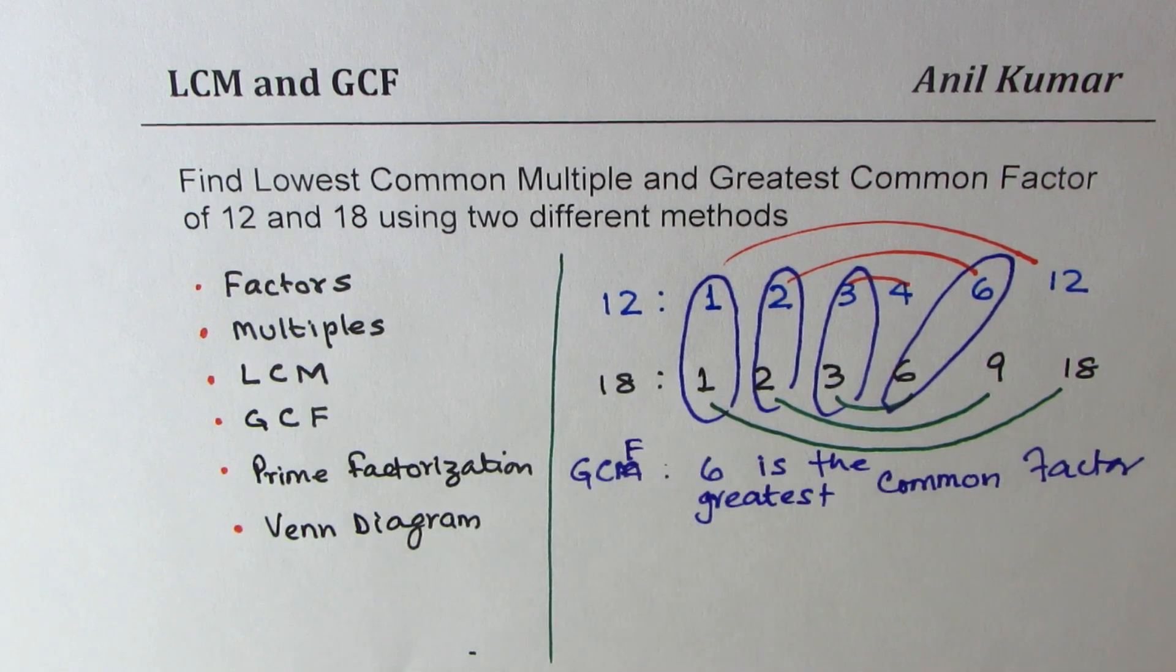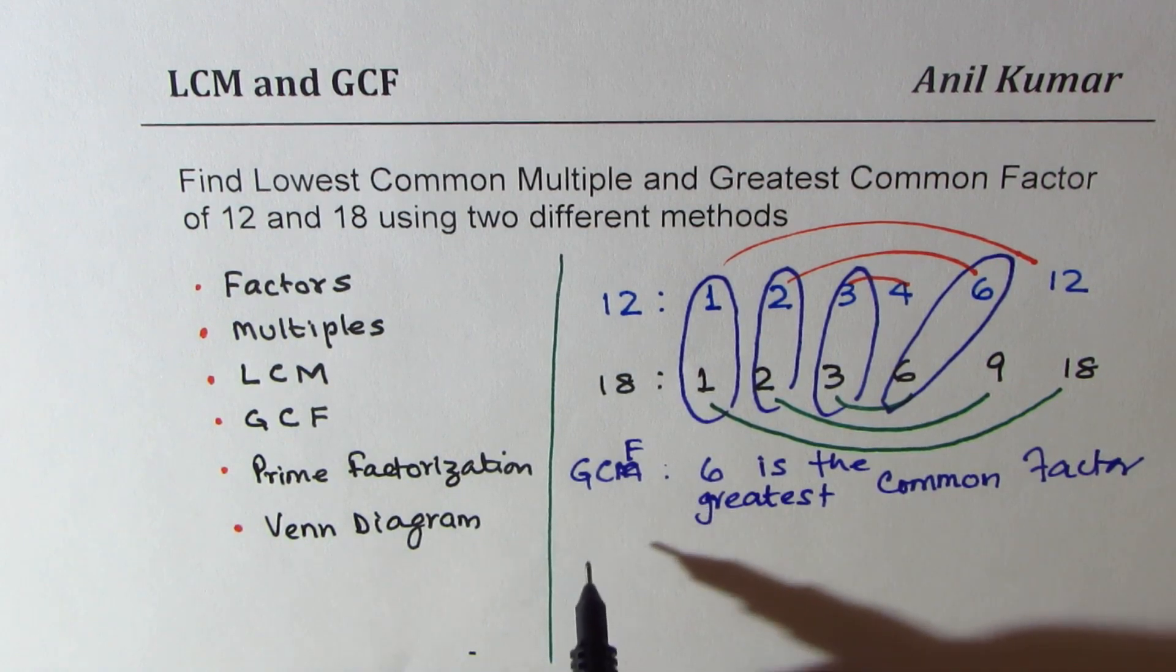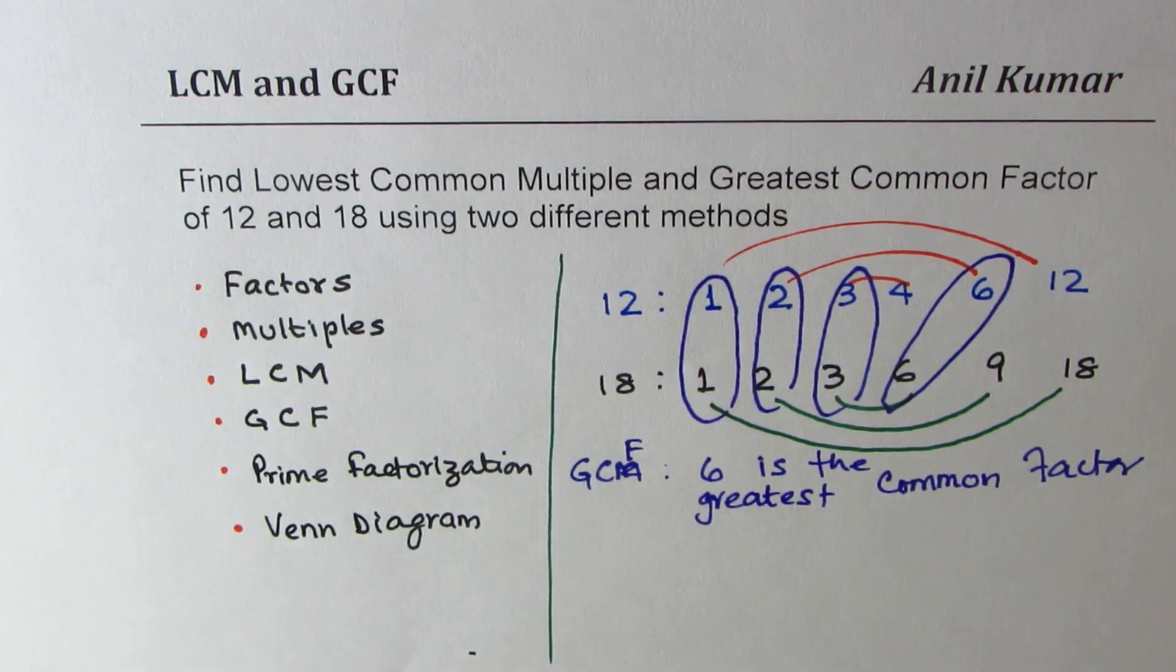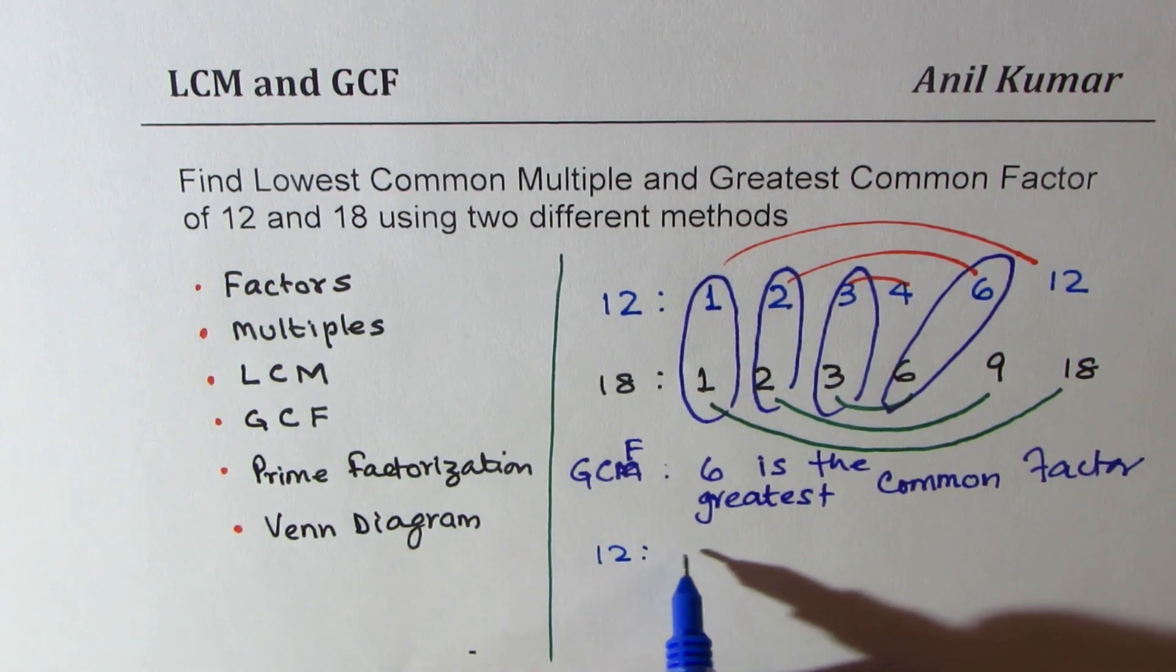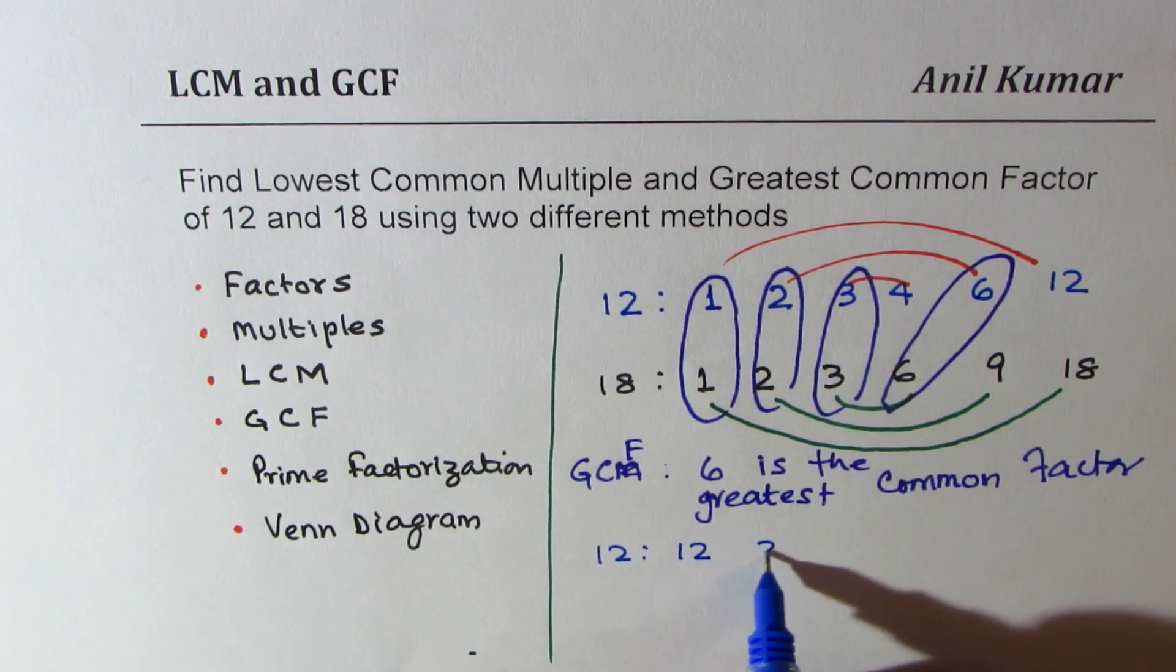That's the greatest common factor, or GCF. Just check which are common and select the one which is greatest. Now to find multiples, we need to write multiples.